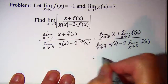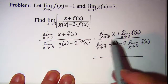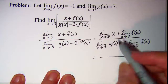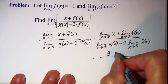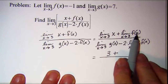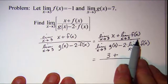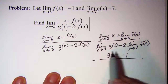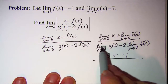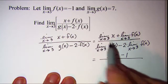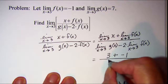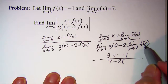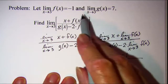Now let's go ahead and evaluate. The limit as x approaches 3 of x is just 3, plus the limit as x approaches 3 of f of x, which we were told is negative 1. In the denominator, the limit as x approaches 3 of g of x is 7, minus 2 times the limit of f of x as x approaches 3, which is negative 1.